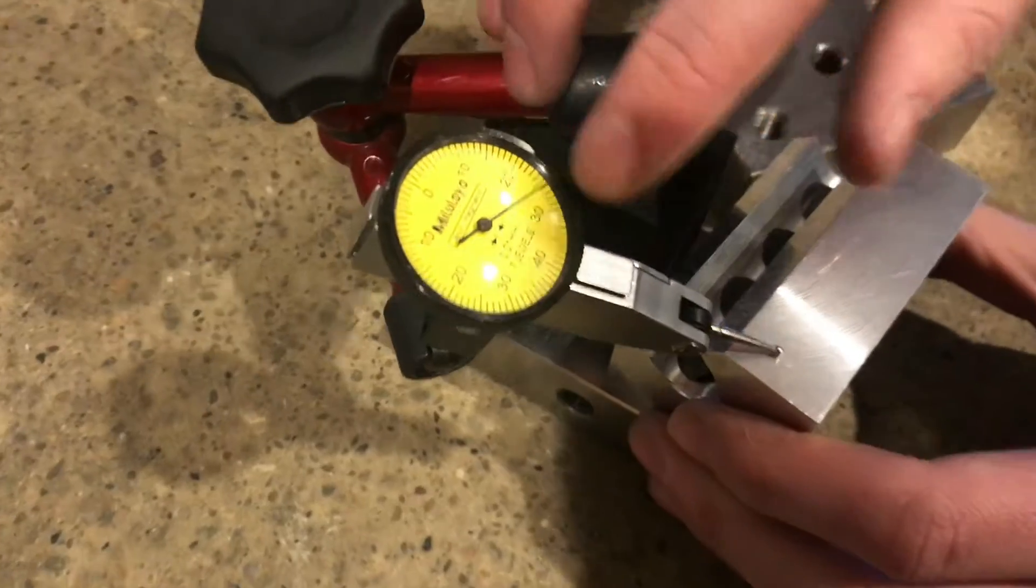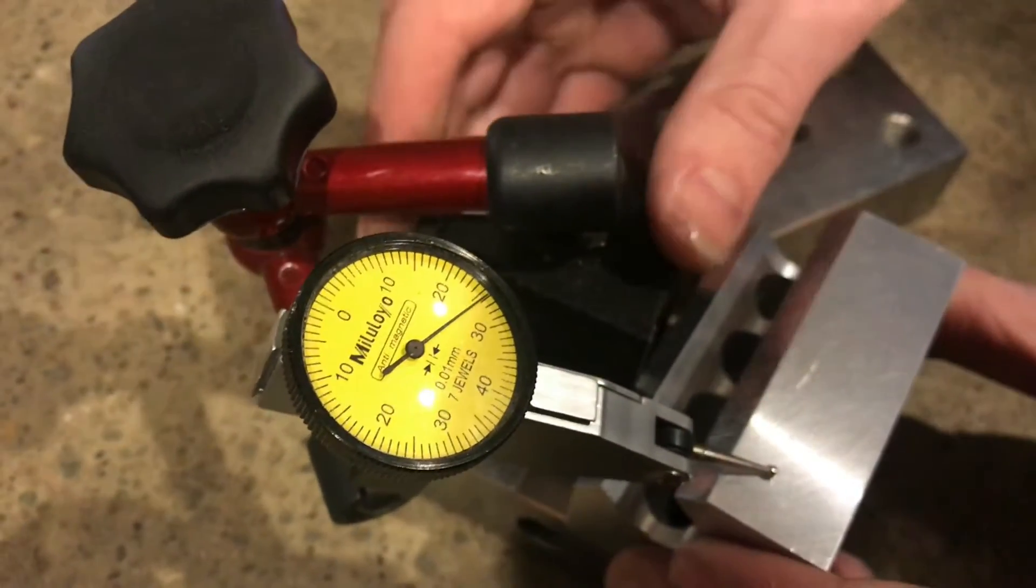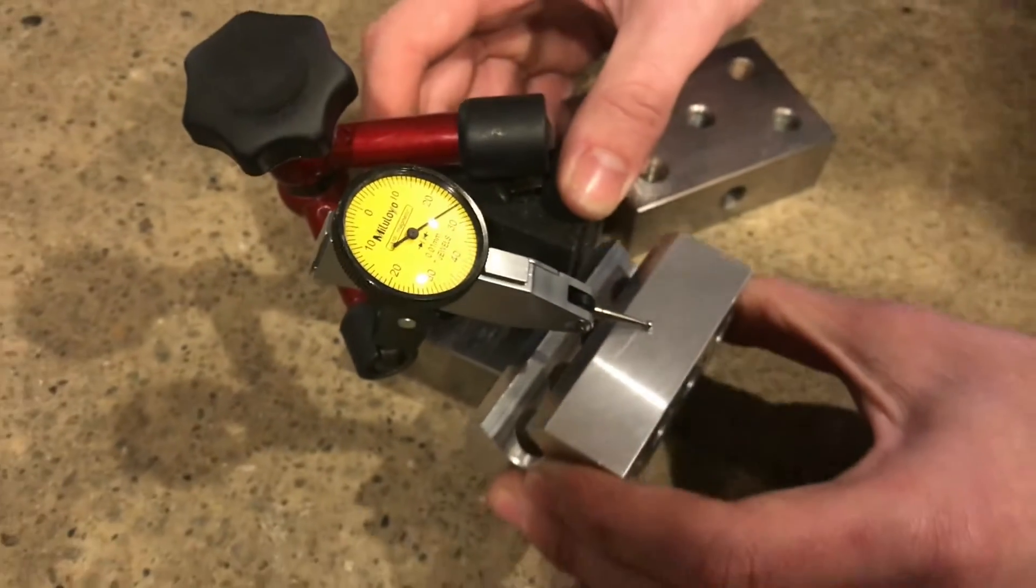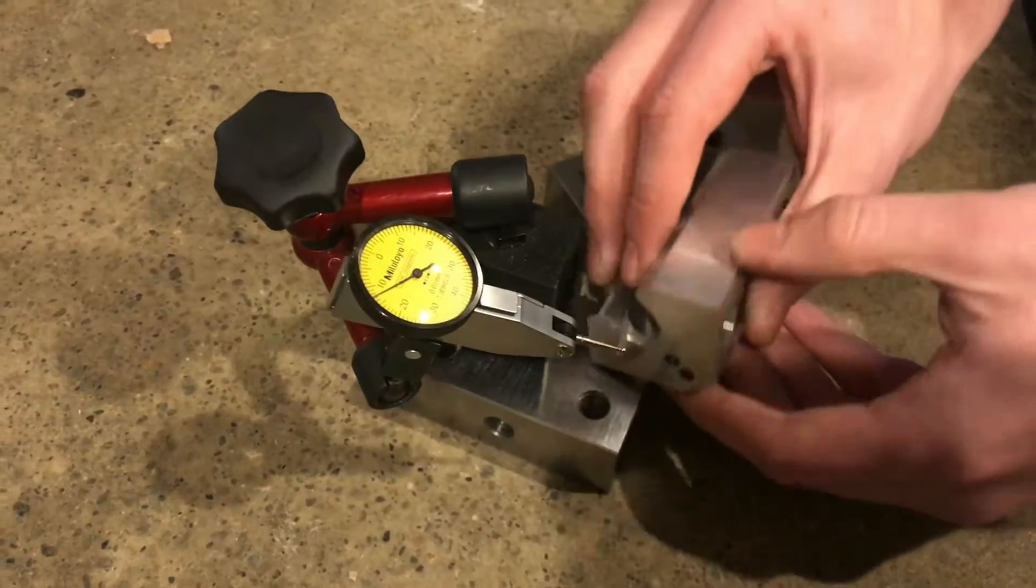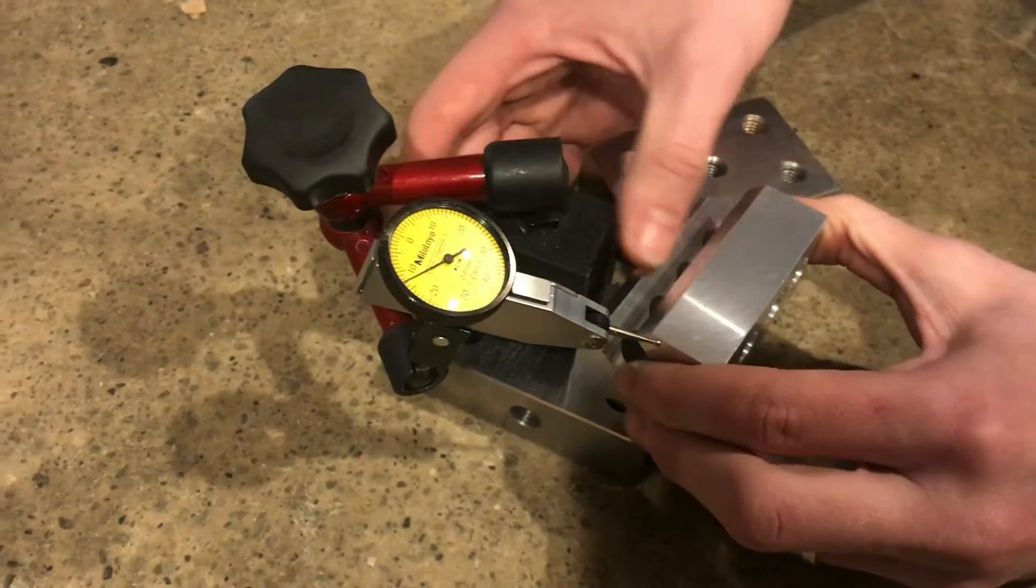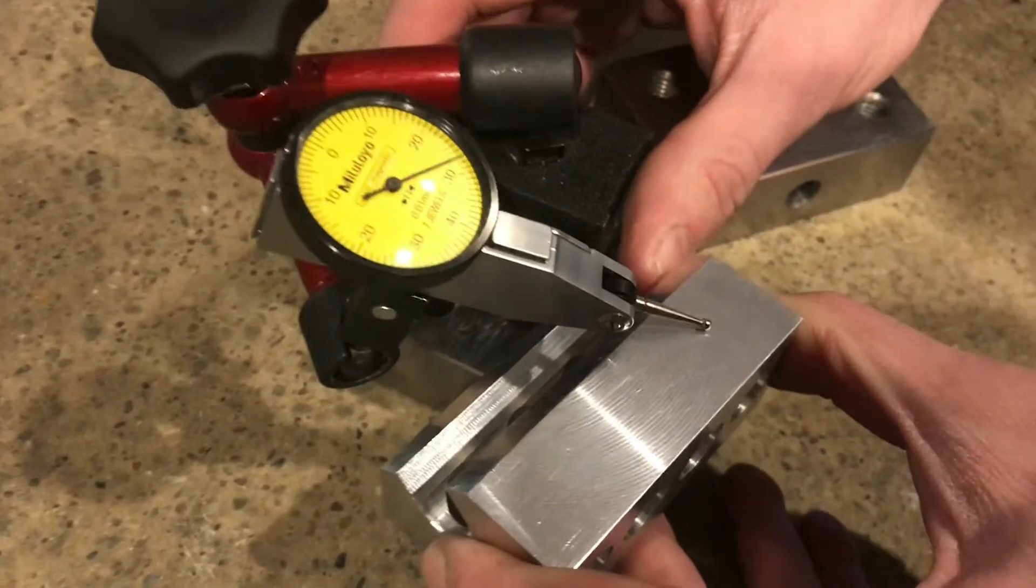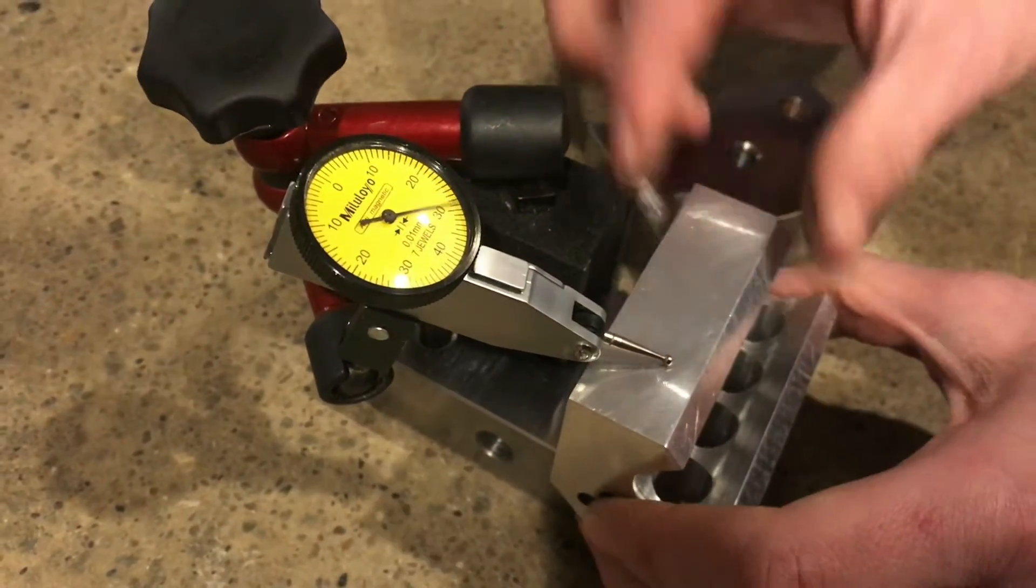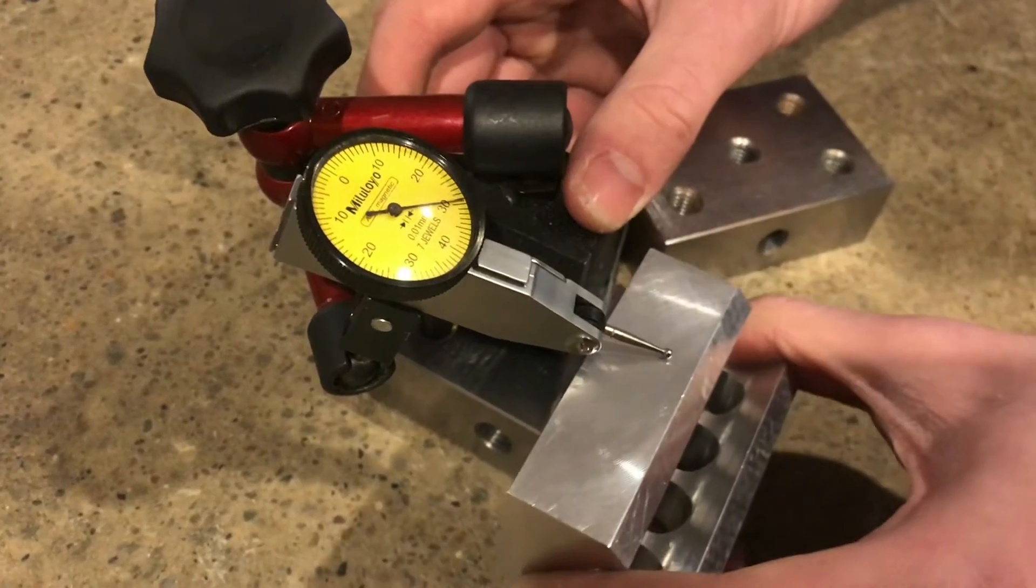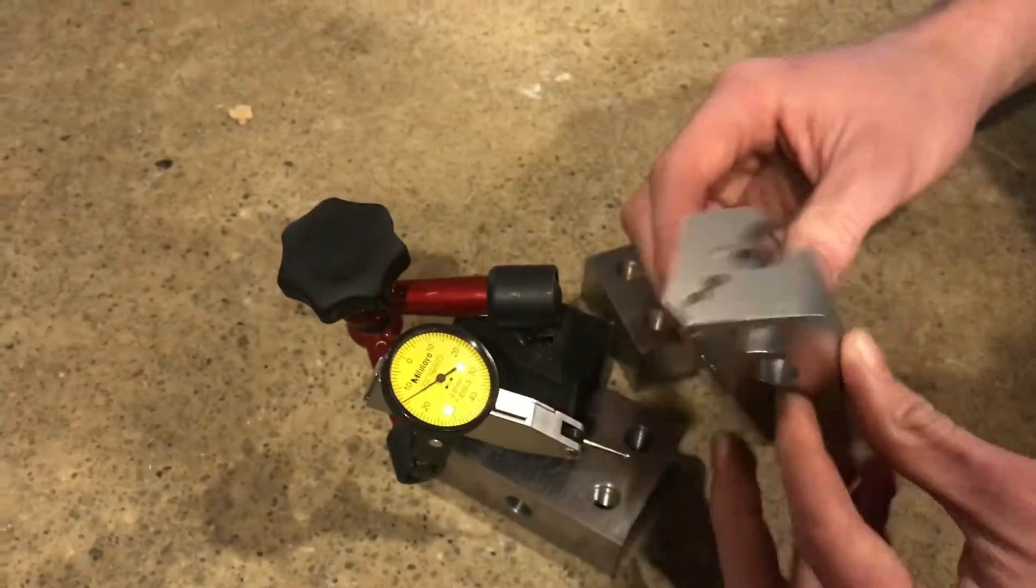These are measured in 0.01 millimeters, which is about four-tenths of a thousandth. Anyway, that side is pretty parallel. Now if I check this side, that side is also parallel. So that is checking for parallelism.